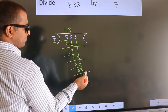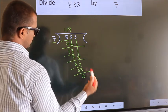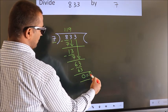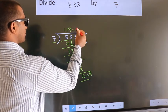No more numbers to bring down, so we stop here. This is our remainder. This is our quotient.